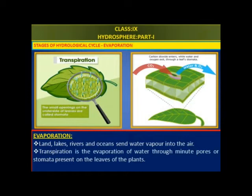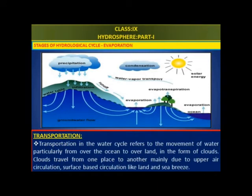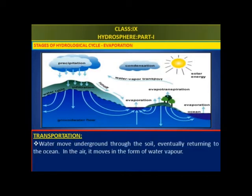Transpiration is the evaporation of water through minute pores or stomata present on the leaves of plants. Transportation in the water cycle refers to the movement of water, particularly from over the ocean to land in the form of clouds. Clouds travel from one place to another mainly due to upper air circulation and surface-based circulation, like land and sea breeze. Water also moves underground through the soil, eventually returning to the ocean; in the air, it moves in the form of water vapor.